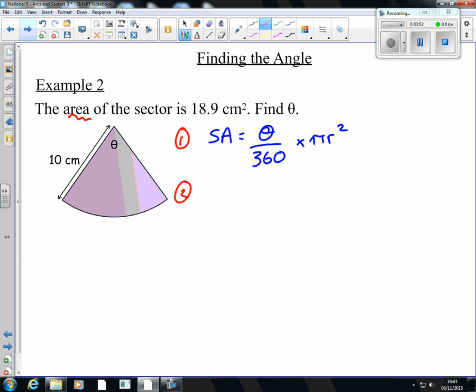Step two, we need to substitute in what we know. So the area we're told is 18.9. We don't know what the angle is, so that's going to stay as theta. And we know from the diagram that the radius is 10.